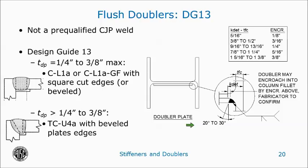The problem with both of these doubler weld configurations is that Design Guide 13 calls these a non-prequalified CJP weld. If this weld is considered a CJP weld, all you have to do is write CJP in the tail of the weld symbol, but a long-for-the-ride consequence is usually that UT testing is required. Although some fabricators have successfully tested these welds, others have not been so lucky. Part of the problem is that as the doubler overrides the radius, a gap forms between the front face of the column and the backside of the doubler, and due to this gap there can be very questionable UT results.